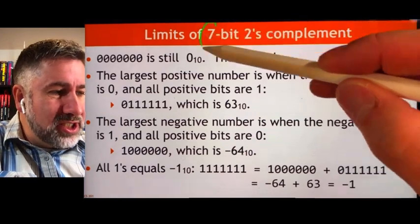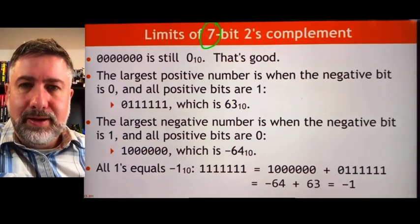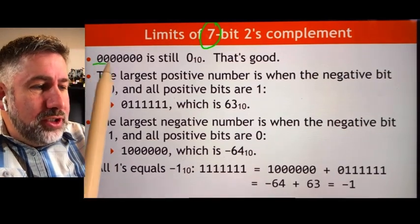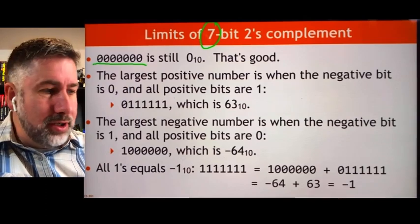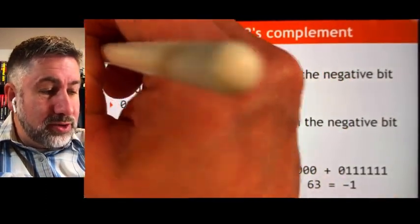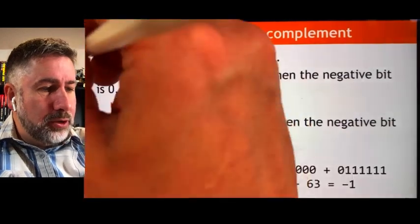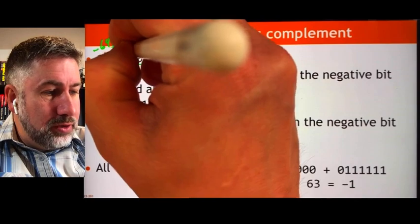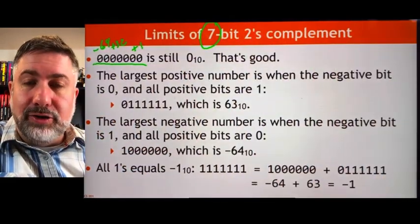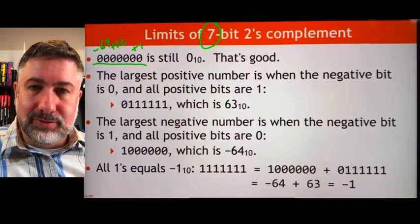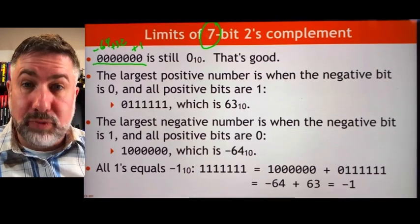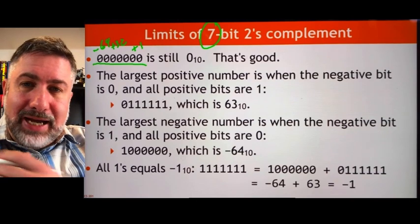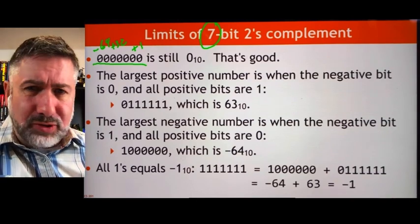In this example, we're using 7-bit two's complement representations. If we put all zeros into this representation, the place values are 1, 2, 4, 8, 16, 32, and negative 64. So all zeros gives us zero. Not only that, there is exactly one way to represent zero, which is good. In our signed magnitude representation, we had multiple zeros, which is problematic.